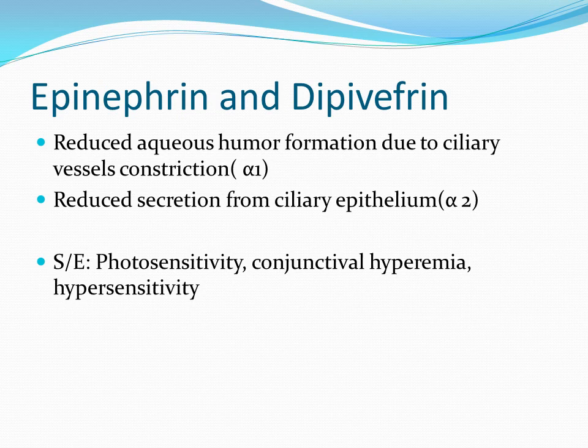Epinephrine and dipivefrine are also used in glaucoma management. Epinephrine is applied topically at 0.5 to 1% strength to lower intraocular tension, but response is variable due to poor corneal penetration. The reduction in intraocular tension is due to increased uveoscleral outflow and beta-2 receptor-mediated increased hydraulic conductivity of trabecular filtering cells, as well as reduction in aqueous formation via alpha-2 and alpha-1 receptor activation in the ciliary body. Dipivefrine is a prodrug of adrenaline that penetrates the cornea and is hydrolyzed by esterases into epinephrine. Though better tolerated and longer acting than adrenaline, dipivefrine still produces significant ocular side effects and is used only as add-on therapy in poorly controlled patients.